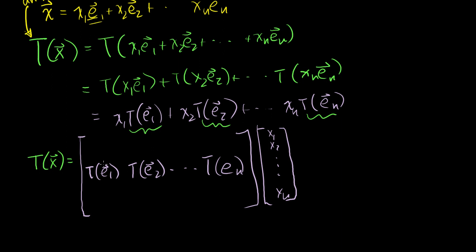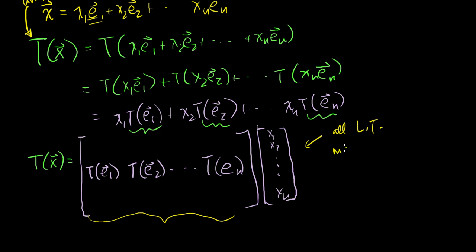We've seen this multiple times. What's really neat about this is I started with an arbitrary linear transformation, and I just showed that any linear transformation of x can be rewritten as a product of a matrix — where the columns are that transformation applied to each of the standard basis vectors — times x. So all linear transformations can be represented as a matrix-vector product. Not only did I show you that you can do it, but it's actually a fairly straightforward thing to do.